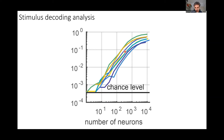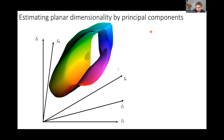This graph shows a decoding analysis using the simplest decoder you can think of — a nearest-neighbor decoder. We take a random subset of up to about 10,000 neurons and try to decode which of the 3,000 stimuli was presented. Chance level is 0.03%. The performance of the decoder increases with the number of neurons and gets to about 90%, compared to the chance level of 0.03%. So the information about the images is there in the visual cortex.